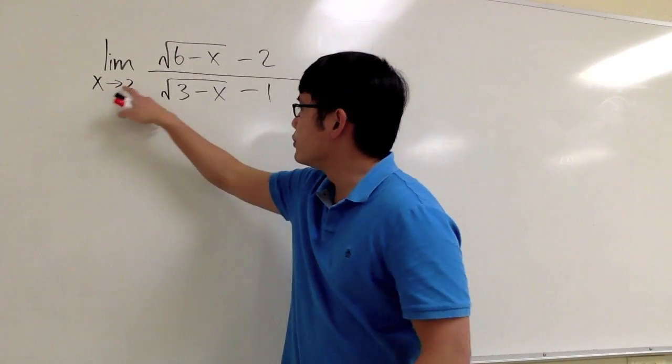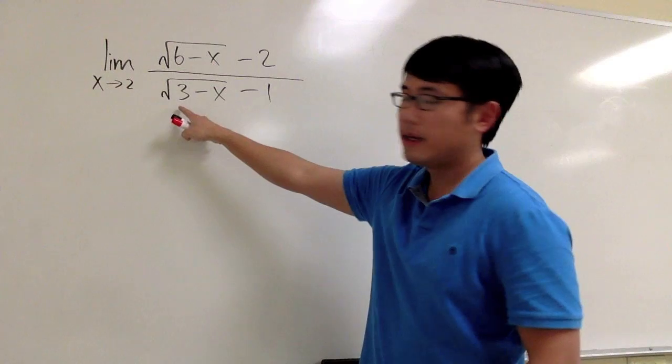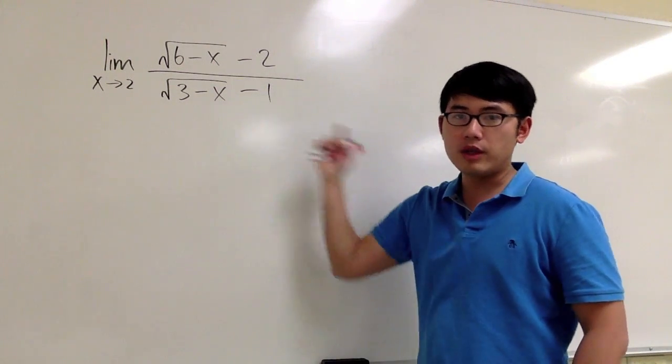The limit is x approaching 2, square root of 6 minus x minus 2 on the top, over square root of 3 minus x minus 1 on the bottom.